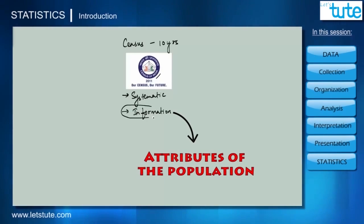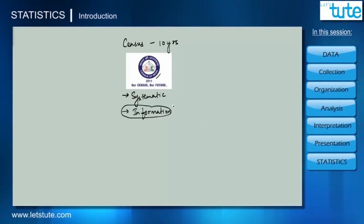This raw or unorganized information that we acquire is called data. And when we talk about census or something to do with data we usually talk about statistics. So let us see what all happens when we are dealing with data in a census.